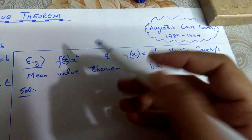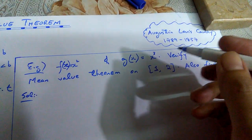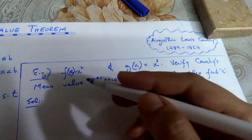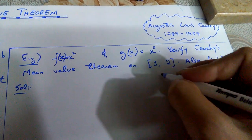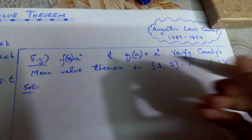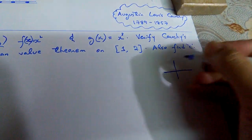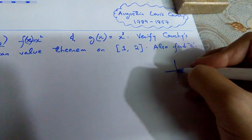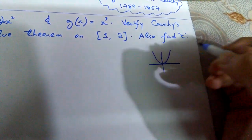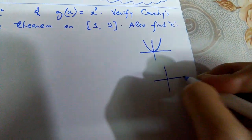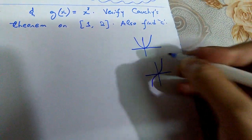You can either use a graphic calculator or draw the graph manually of these two functions to find out whether they are continuous on the closed interval [1, 2]. The graph of x squared is a parabola, and once I draw it, it looks like this. It is a continuous function. Similarly, the graph of x cubed gives a shape like this — also a continuous function.